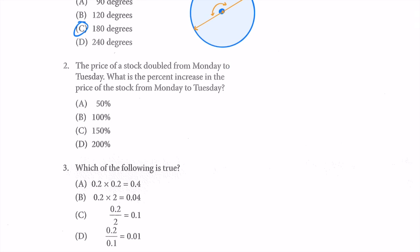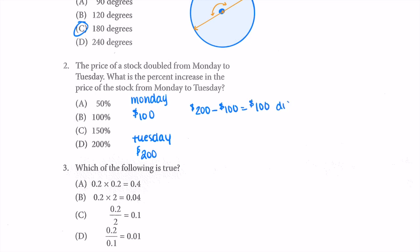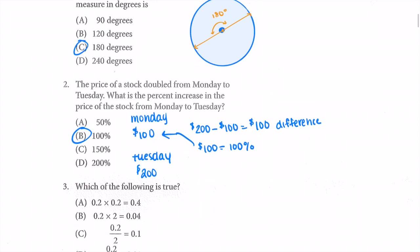Next question: the price of stock doubled from Monday to Tuesday. What is the percent increase in the price of the stock from Monday to Tuesday? Let's say the price of the stock was $100 on Monday, then on Tuesday it was $200 because it has to double. We need to find the percent increase — the difference between these two numbers is $100, and $100 is 100% of the original price. So the percent increase is 100%.